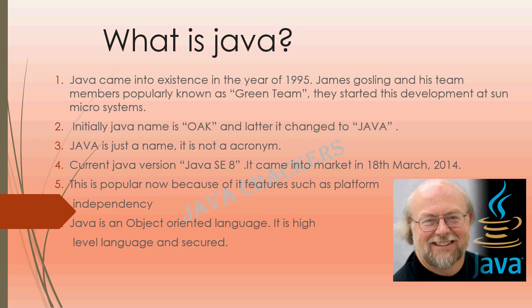JDK 1.0, 1.1, and so on came into market, and finally Java version stabilized with Java SE 8, which came into market in March 2014. Java is popular because of its built-in feature called platform independency. If you compile a Java program, it will generate a .class file, and we can use this .class file in any platform — that coding won't change from platform to platform.